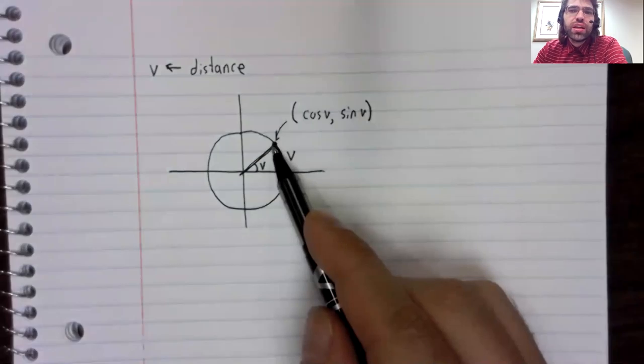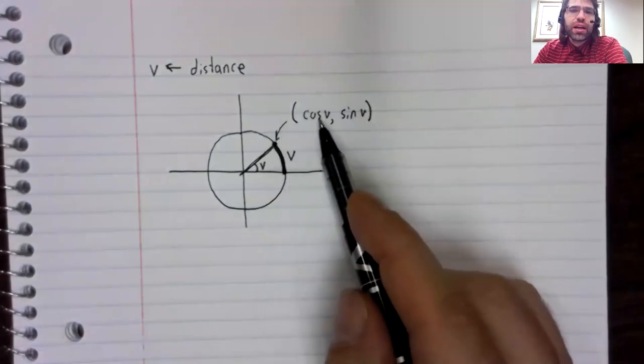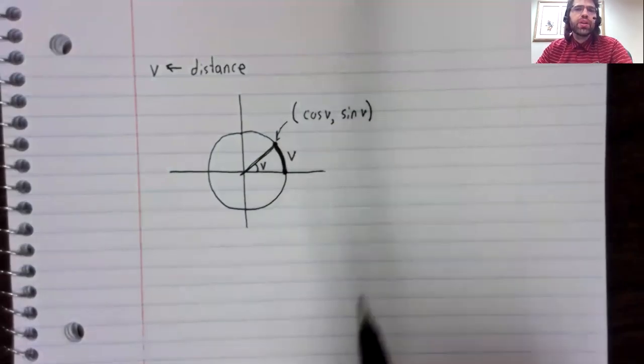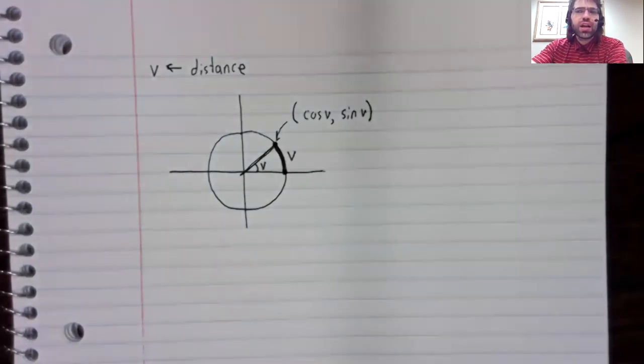So whether you think of V as an angle, or whether you think of V as an arc length, you get taken to the same point.